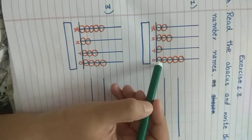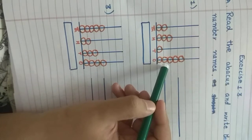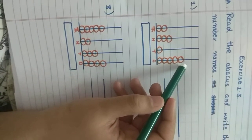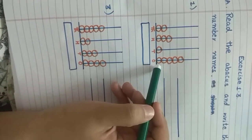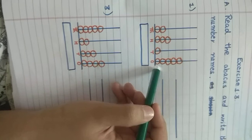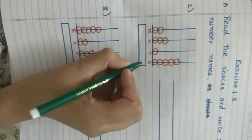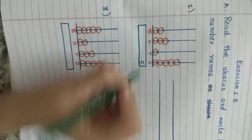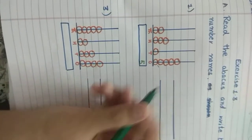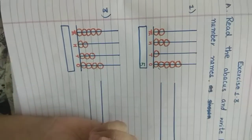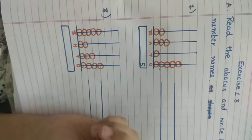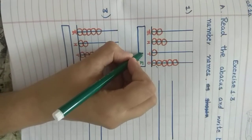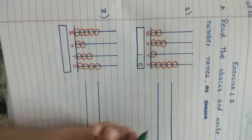Count the beads: 1, 2, 3, 4, 5. How many beads of 1s do you see? 5. So I will write down 5. How many beads of 10s do you see? 1. So here I will write down 1.